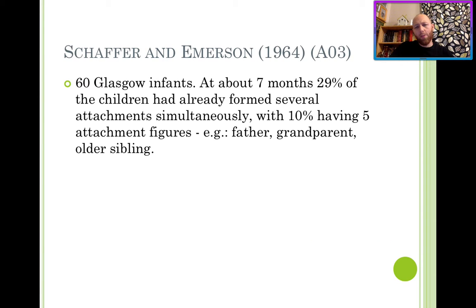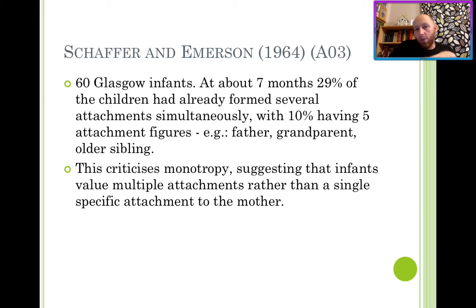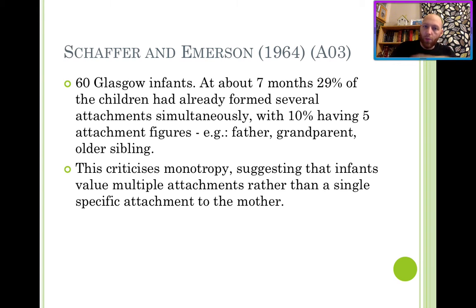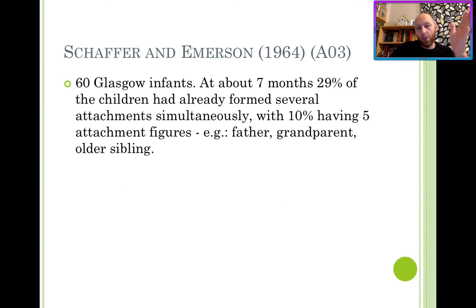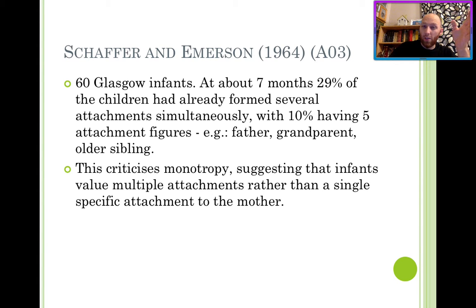Further evidence: Schaffer and Emerson criticise the idea of monotropy — the idea that we have one attachment figure more important than all the others. In their study, they found that 29% of children had already formed several attachments simultaneously, so they didn't have a single primary attachment figure but multiple attachments. This criticises the idea of monotropy. Other findings were that many children did not form attachments to the people who provided the physical care, even though mothers were providing most of it.